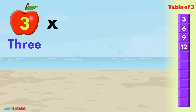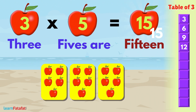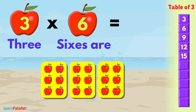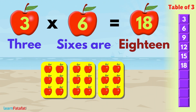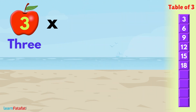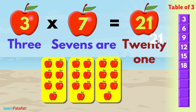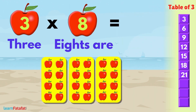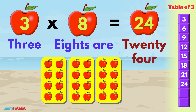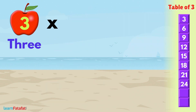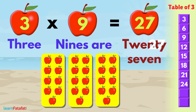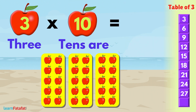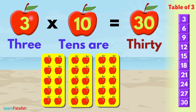3 5s are 15. 3 6s are 18. 3 7s are 21. 3 8s are 24. 3 9s are 27. 3 10s are 30.